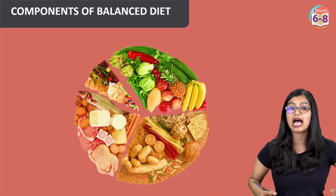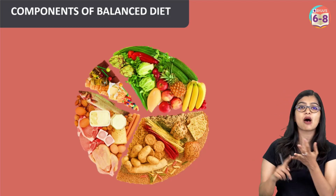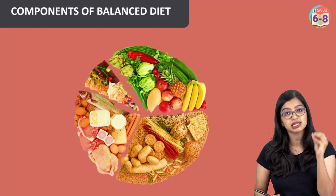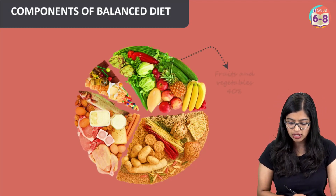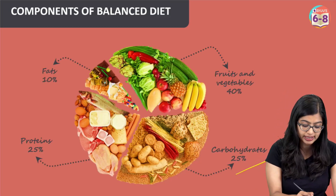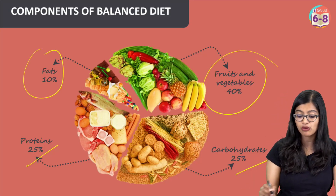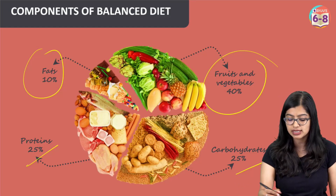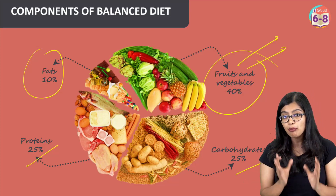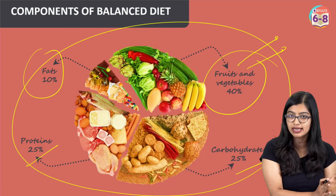The nutrients mainly include macro and micronutrients — carbohydrates, proteins, fats, vitamins, and minerals. All of these must be present in our diet. A general guide is about 25–30% carbohydrates, 25% proteins, 10% fats, and about 40% fruits and vegetables, which are the main sources of vitamins and minerals. It's important that all your nutrients are present in the food you consume in a day.